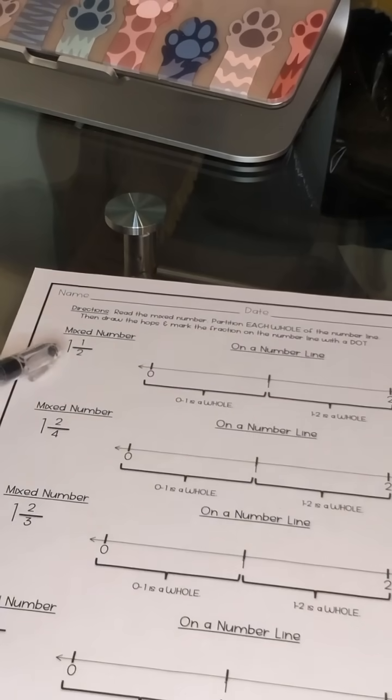Mixed number fractions always have a whole number and a fraction. So this is one as our whole number and a half as our fraction. If we were going to show this on a number line, we need to look at the denominator, which is two.